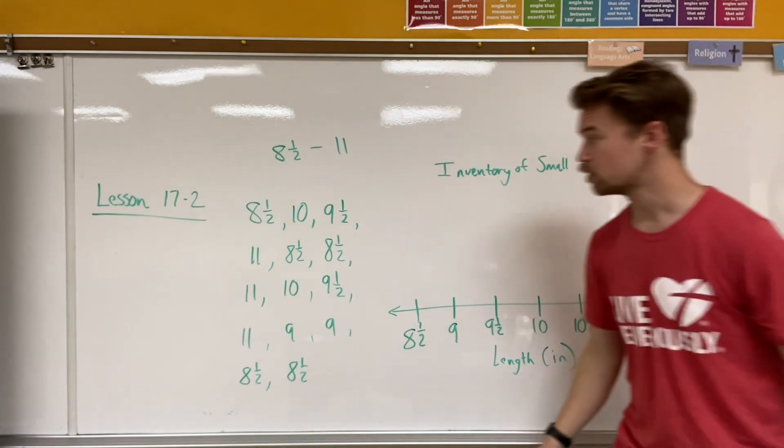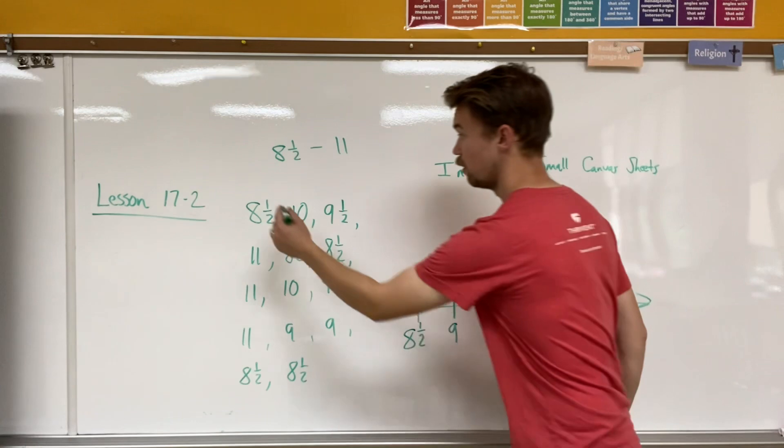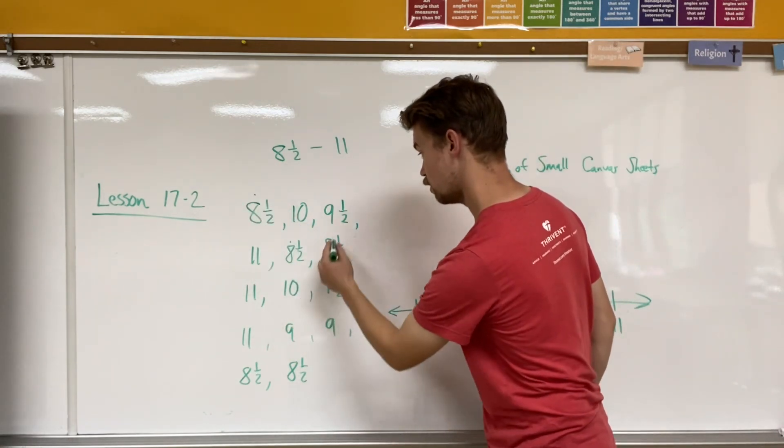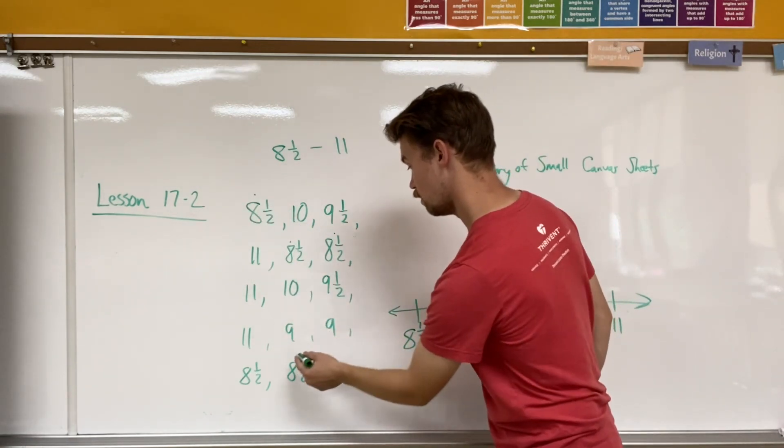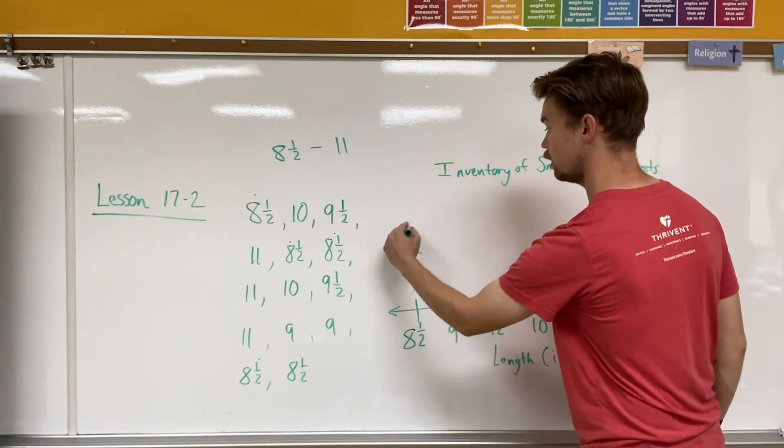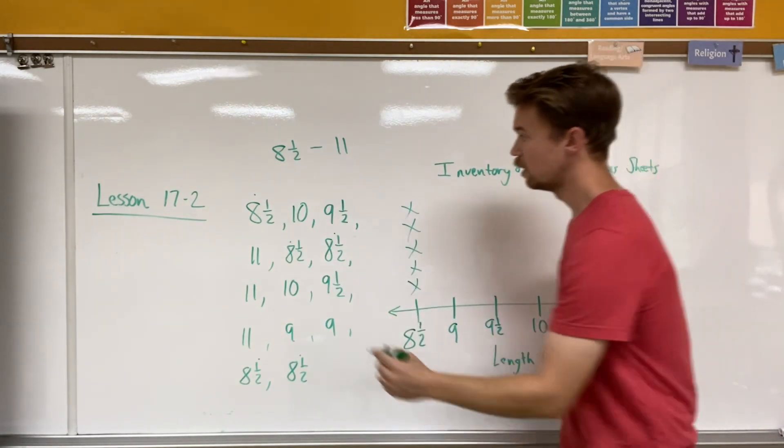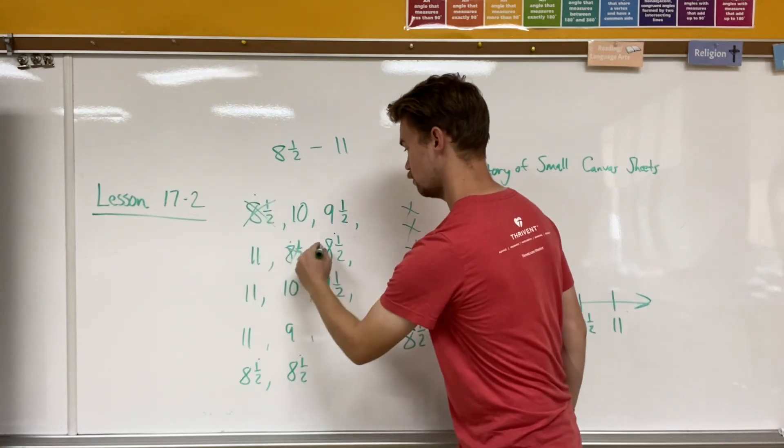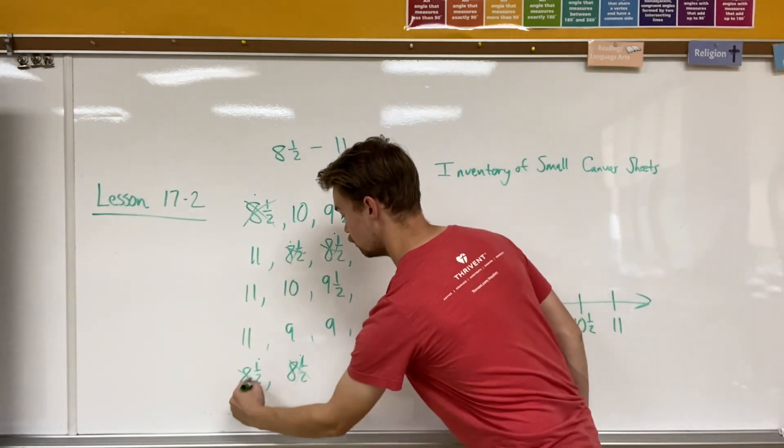Now I'm going to be transferring the data. So how many eight and a halves do I have? One, two, three, four, five. Looks like I have five. One, two, three, four, five. Okay. I'm going to cross those out. Perfect.